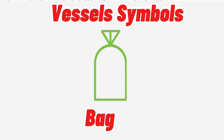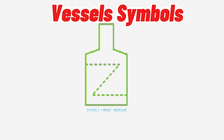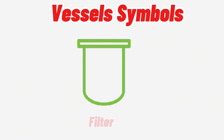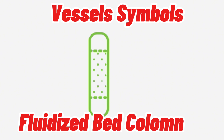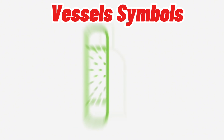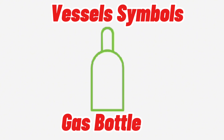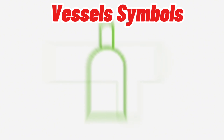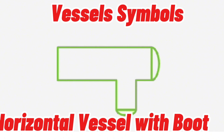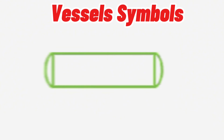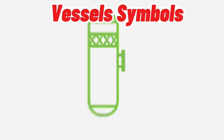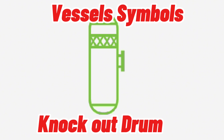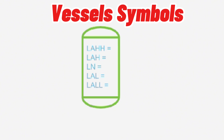Vessel types include: Bag, Boiler, Filter, Filter Fluidized Bed Column, Gas Bottle, Horizontal Vessel with Boot, Horizontal Vessel, Knockout Drum, and Level Table.